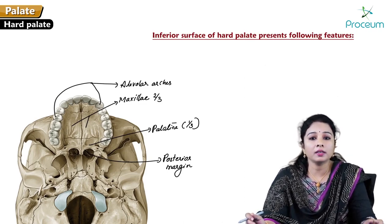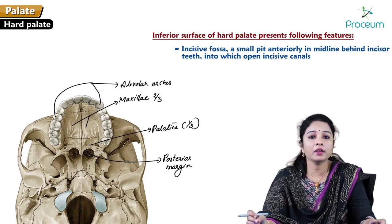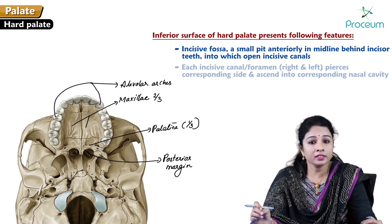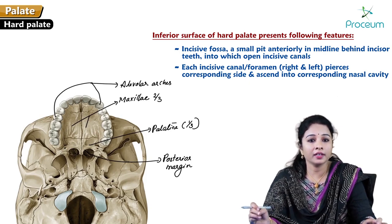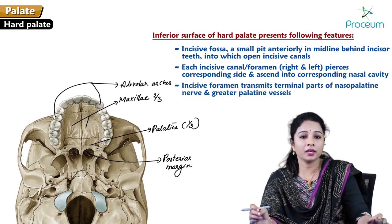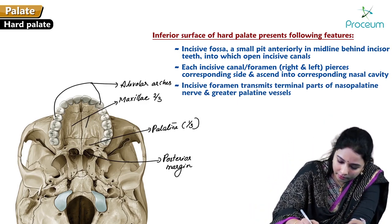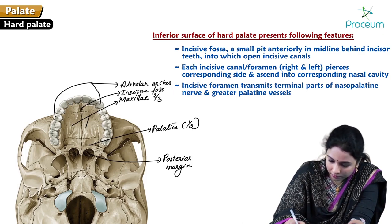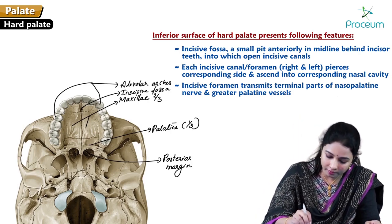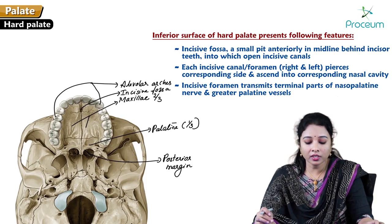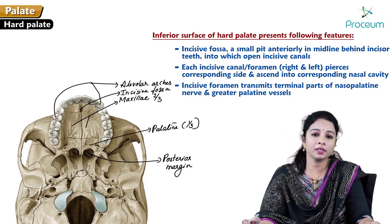The inferior surface of the hard palate presents the incisive fossa, which is a small pit anteriorly in the midline behind the incisor teeth. The openings of the incisive canals are located here. Each incisive canal pierces the corresponding side and ascends into the nasal cavity. The incisive foramen transmits the terminal part of the nasopalatine nerves and greater palatine vessels.